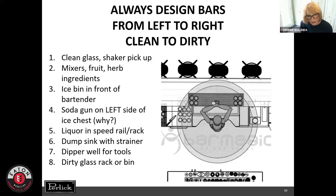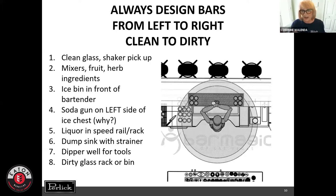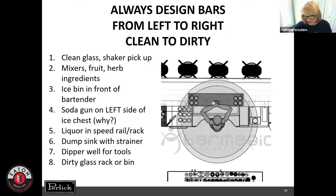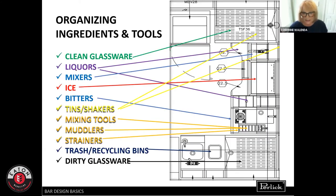Liquor out should always be on the speed rail in front of the bartender and to the sides, along with a liquor step to the right. To the right of that is a dump sink with a strainer — I'll talk more about dump sinks in a bit. Further right is an area where the bartender has space to set down dirty glasses. Left to right, clean to dirty.